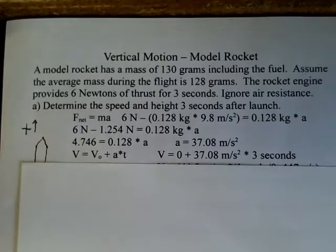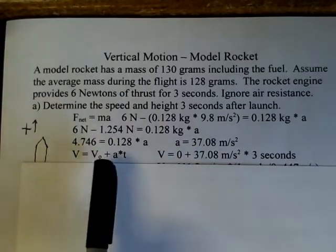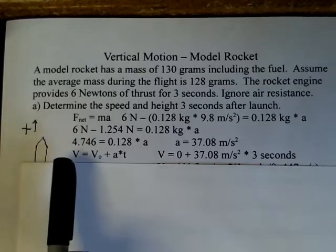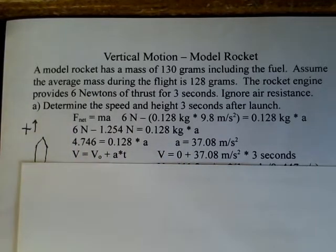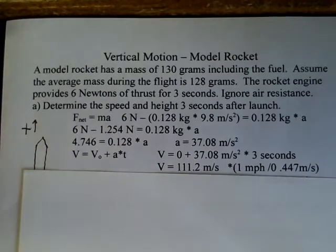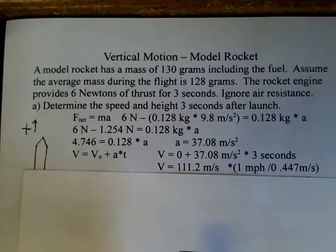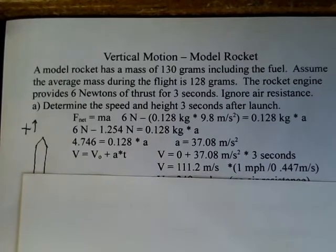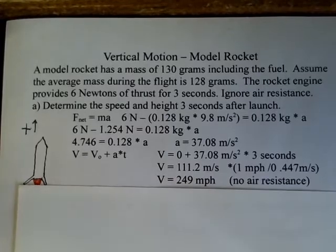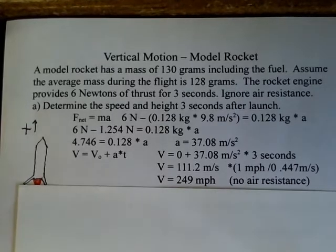We're asked to calculate the speed and height at three seconds. We know the time is three seconds, the acceleration is 37.08 m/s², and the initial velocity is zero at the launch pad. The final speed of the rocket comes out to 111.2 meters per second. Converting to miles per hour for reference, that's 249 miles per hour — not out of the realm of possibility for model rockets.